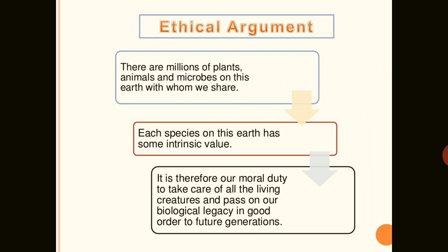Ethical arguments state that there are millions of plant, animal, and microbial species that have evolved just as we have, sharing the planet with us. Without these species, there would be no oxygen, making life on Earth impossible. Every species has an intrinsic value, even if it is not of direct use to us. It is therefore our moral and ethical duty not to destroy them, but instead to take care of their well-being and pass on this rich biological legacy to future generations.